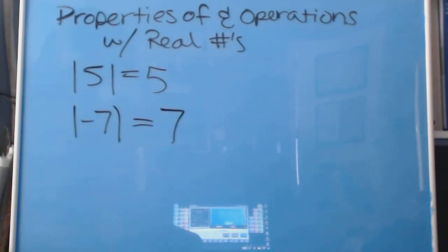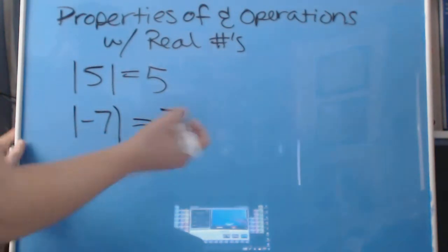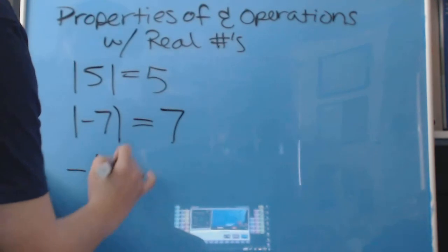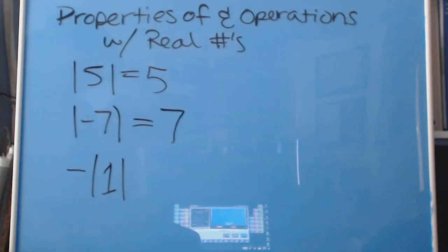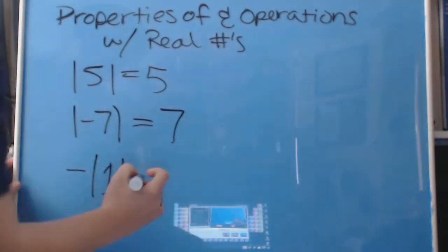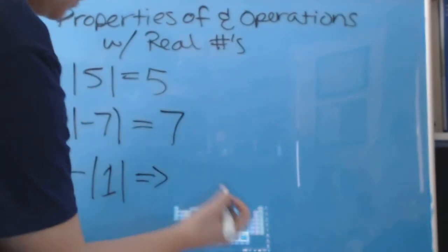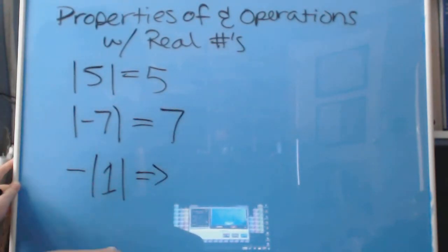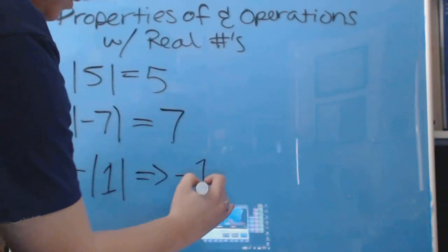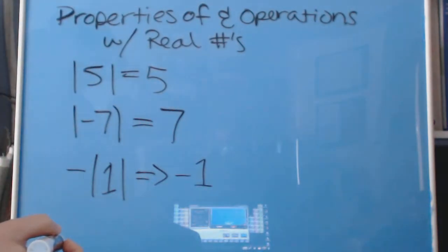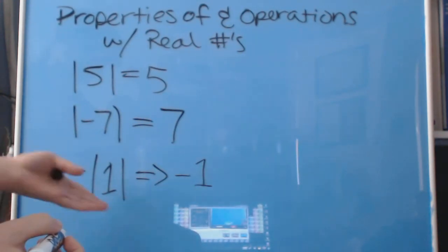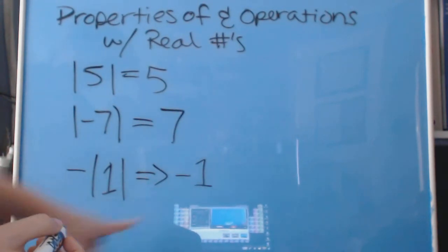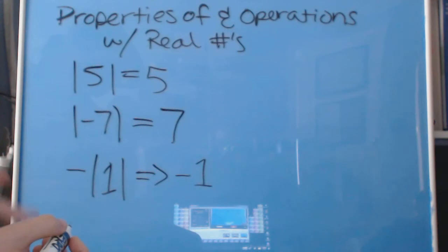Now we've got number 18. This one's a little trickier — there's a negative on the outside. The absolute value part gets resolved first: the absolute value of 1 is 1. But we still have that negative hanging around on the outside, so it influences the positive 1 to become negative 1.